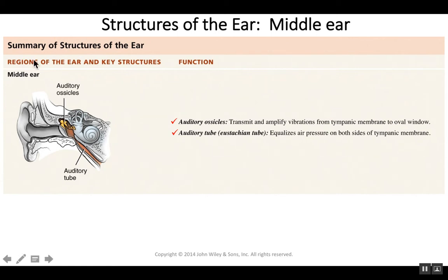So what have we learned so far? We have sound waves coming in, vibrating the tympanic membrane, vibrating the three auditory ossicles — the third sitting inside the oval window of the cochlea.